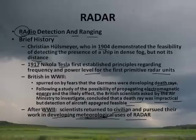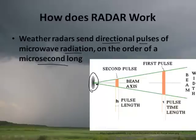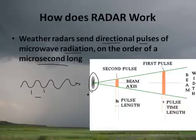How does radar work? Weather radars send a directional pulse of microwave radiation on the order of a microsecond long. They have a dish that sends out an electromagnetic pulse — a wave with a particular wavelength. It hits something, maybe a hailstone out there, and it bounces back. The radar turns on, then waits just a microsecond for the pulse to return, and then it tells you how far away that something is.